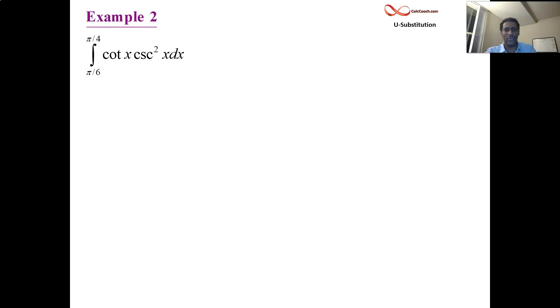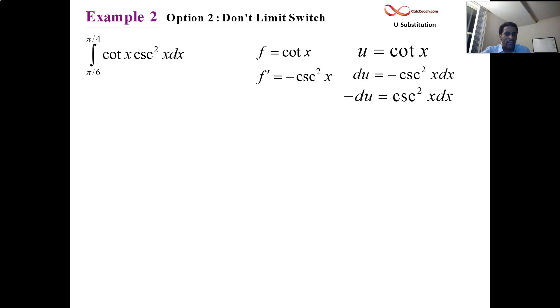We have cotan x times cosecant squared x. Going from pi over 6 to pi over 4. And we're not going to do a limit switch here. Cotan x's derivative is negative cosecant squared x. So if you let u be equal to cotan x, du will be negative cosecant squared x dx. You have to sub for cosecant squared. Times by negative 1, just like you divided by 3.